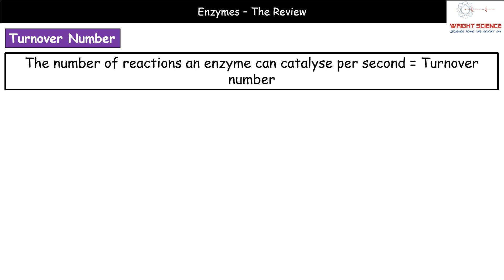A new phrase we need to know for A-level is the turnover number. The turnover number is simply the number of reactions that an enzyme can catalyze per second — it's an actual numerical value. Obviously, the higher it is, the more reactions it can catalyze each second, meaning we make more product each second.